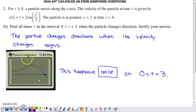In part B, it says find all times between zero and three when the particle changes directions. Justify your answer. This is the velocity graph plotted on the window from zero to three.